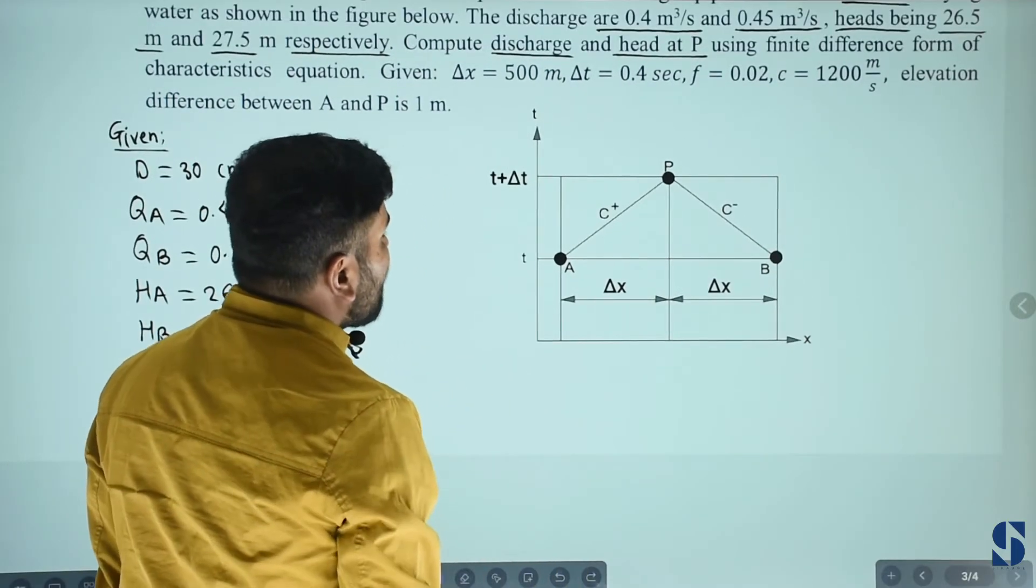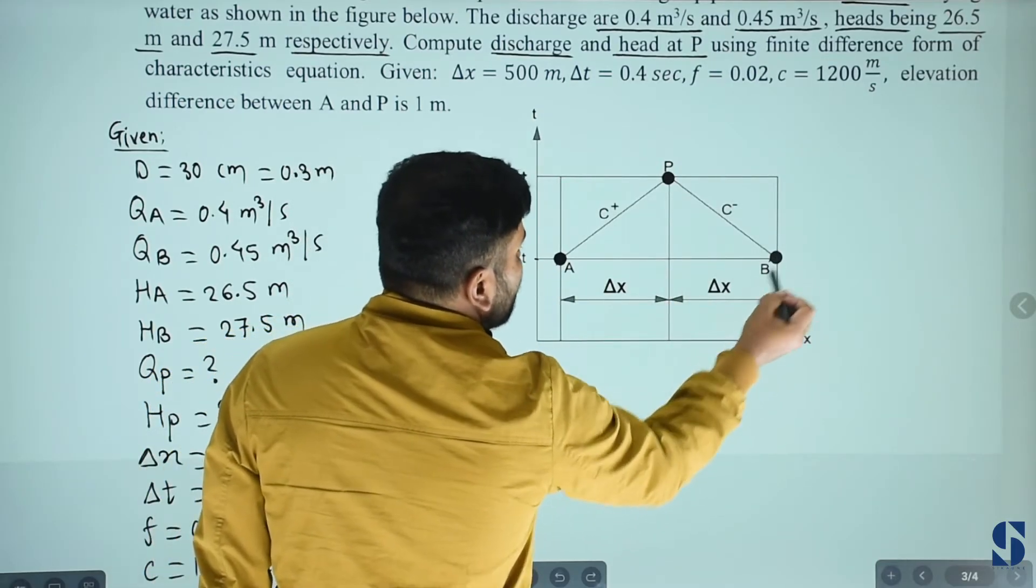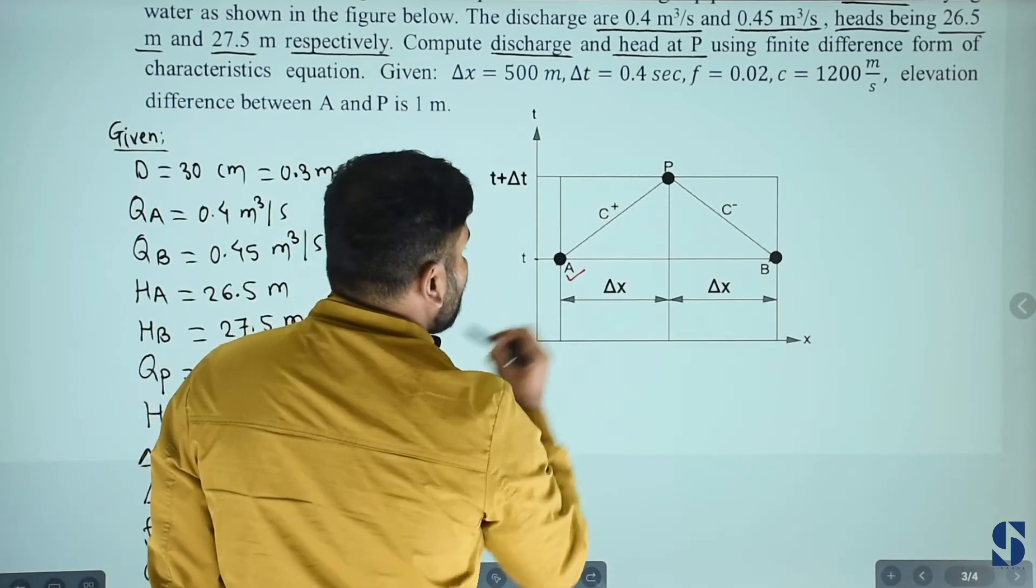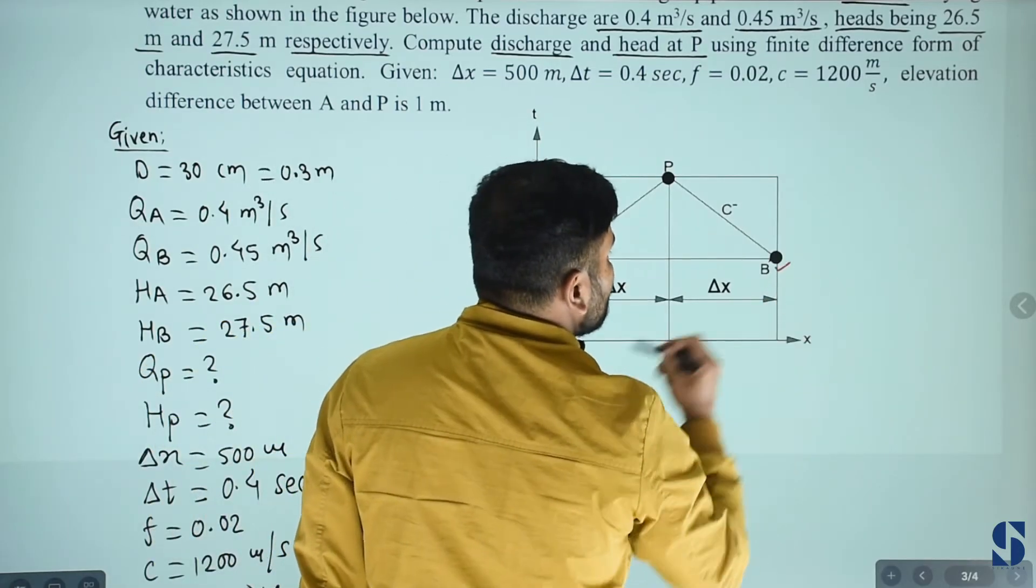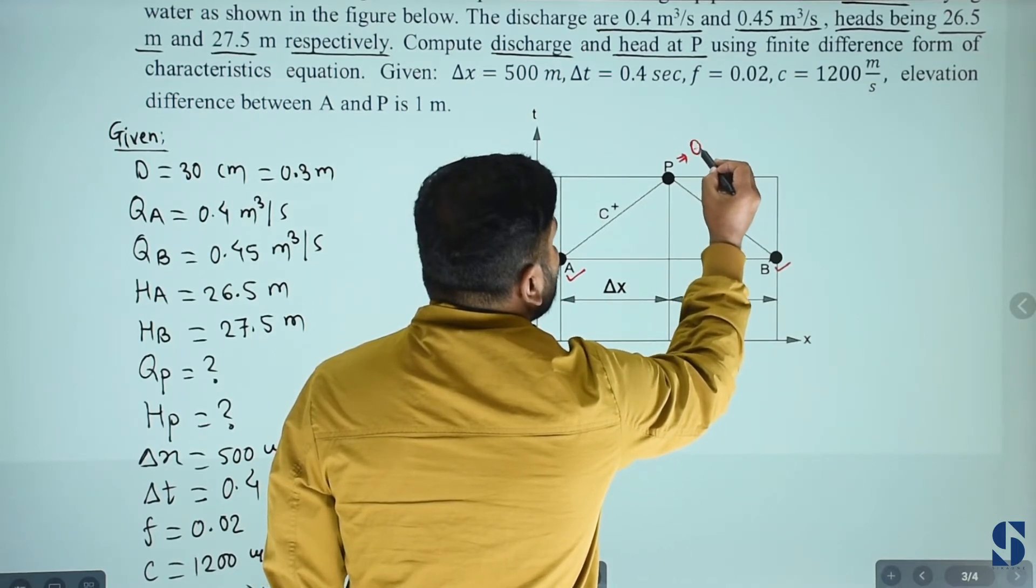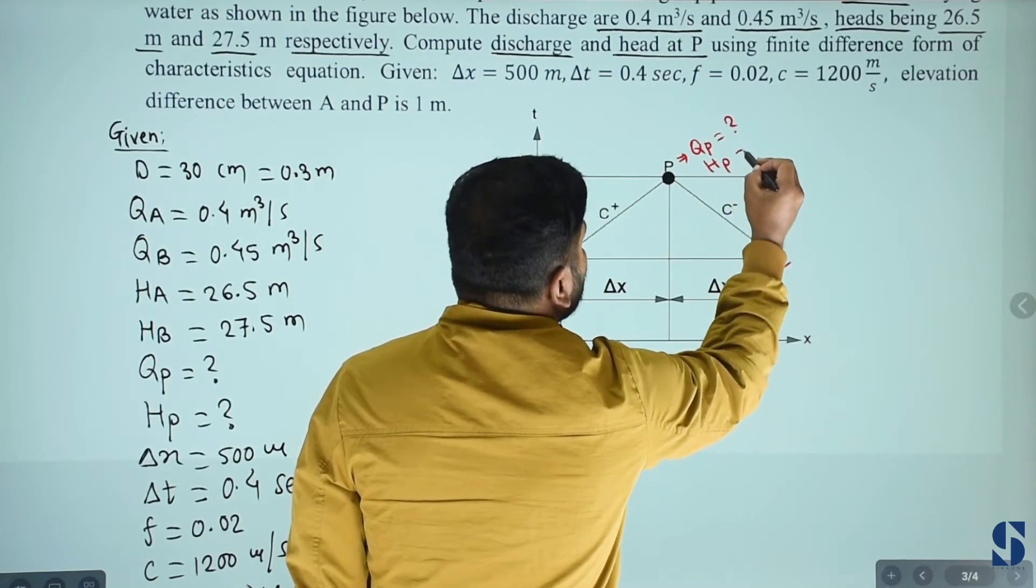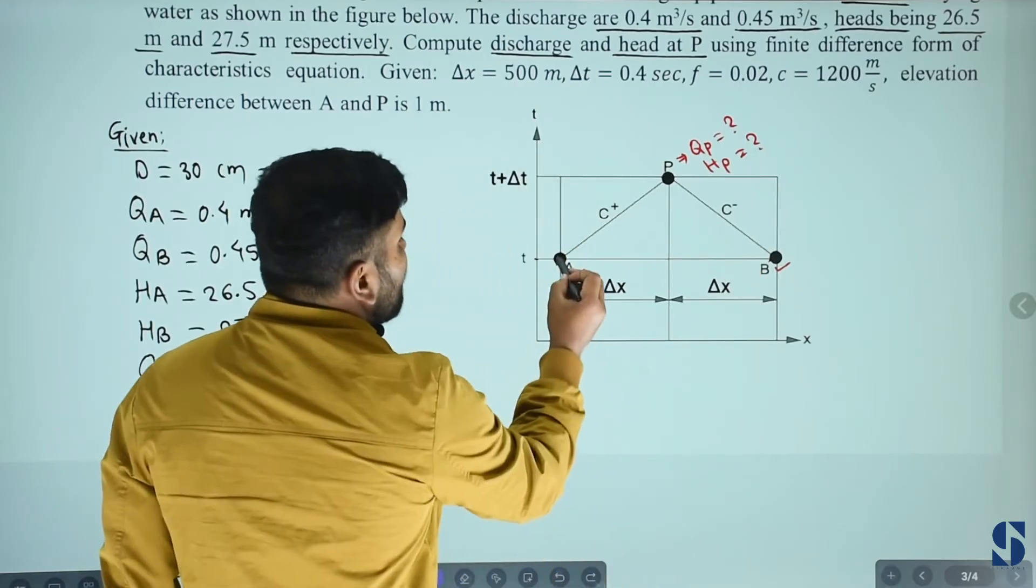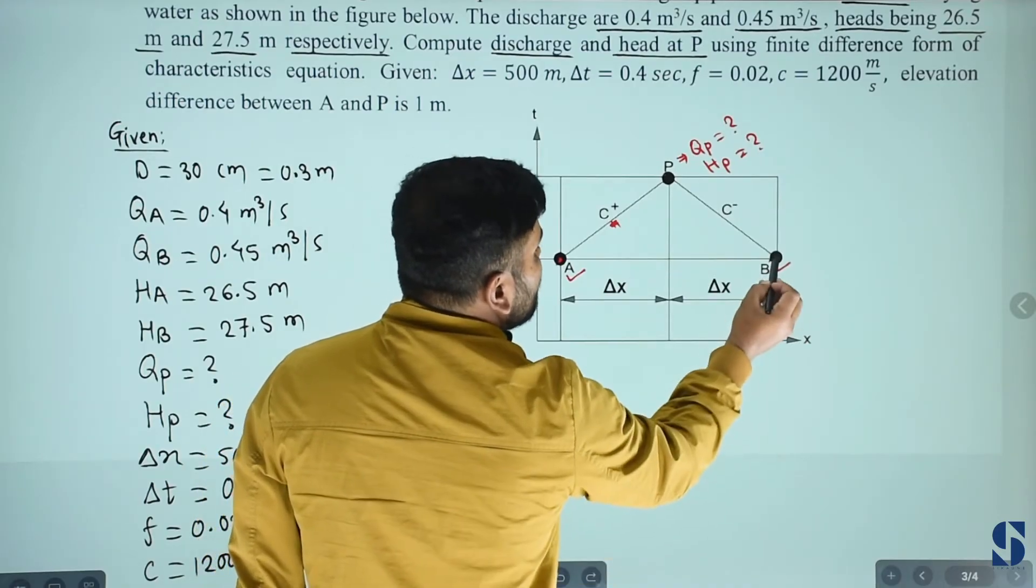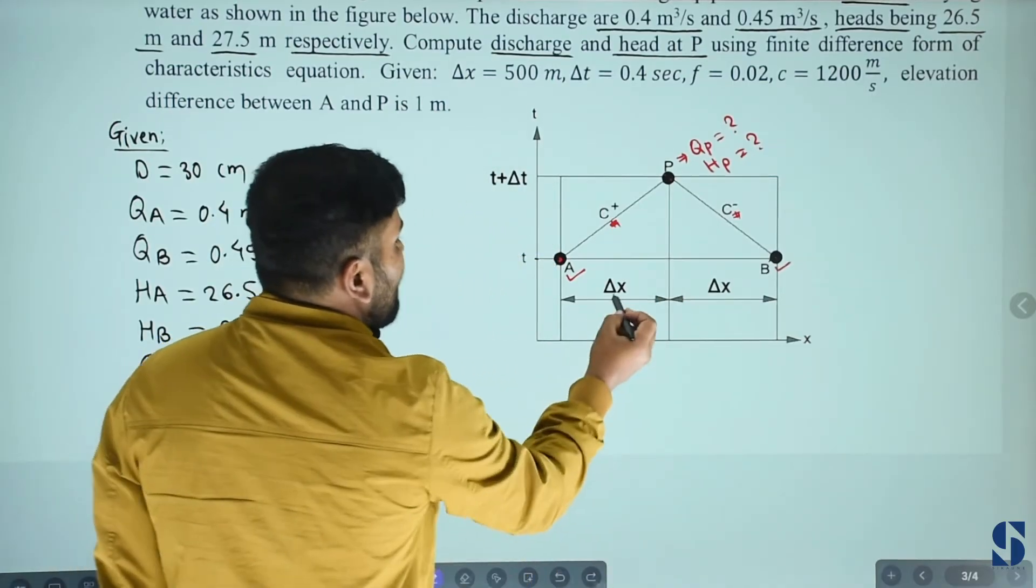So finite difference form, mark point A, B point, and P point. HP equals to, within P and AP line characteristics.